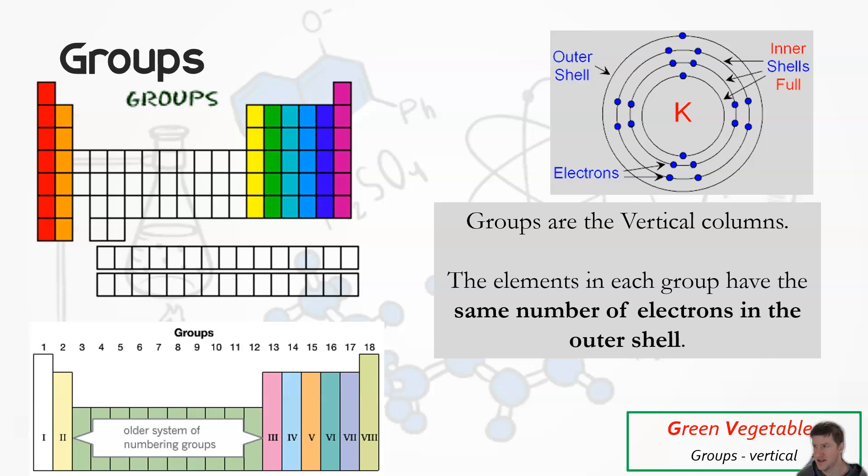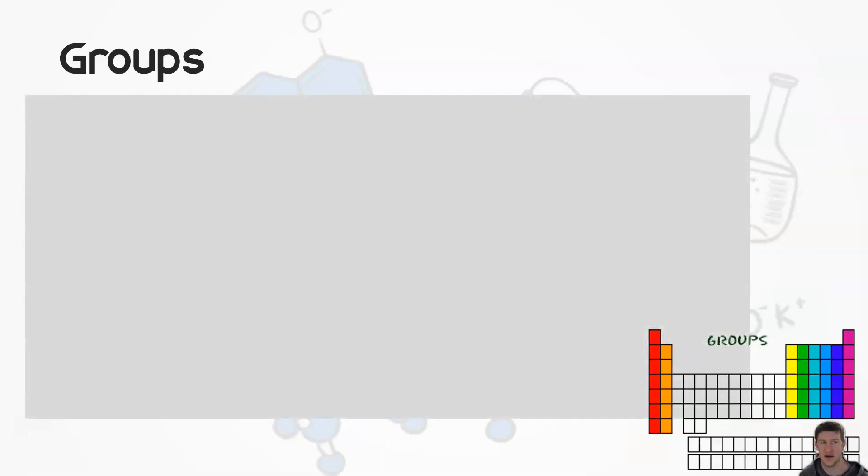This is the number of electrons in the outer shell. Green vegetables - groups are vertical, vertical number of electrons in the outer shell. We care about that because that's the bit that we're going to talk about in terms of whether it's going to gain or lose an electron. But we also need to know how many that shell can have, therefore we need to know what shell that is. That brings us to the next one.